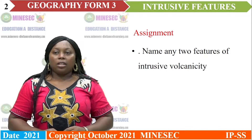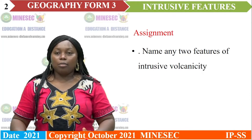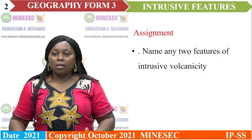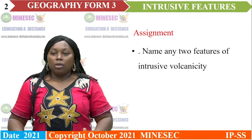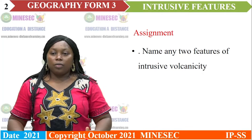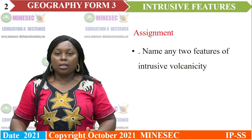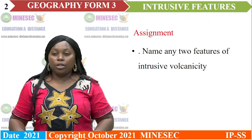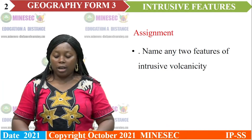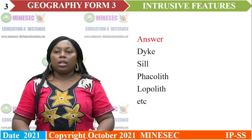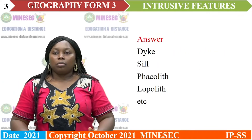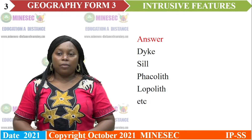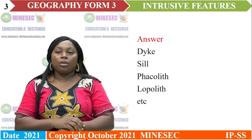Before we get into our lesson, let us correct the assignment of the last class. The assignment states: name any two features of intrusive volcanicity. The answers: we have a dike, sill, facolith, and many others.